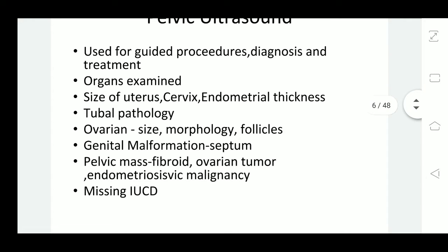Pelvic ultrasound is used for diagnosis, treatment, and follow-up of certain diseases, and also in certain guided procedures. The organs examined are basically the cervix, uterus, and ovaries. In the uterus, we would like to know the size, all the dimensions — anteroposterior, transverse, and longitudinal — the myometrium texture, the endometrium thickness, and the uterine cavity. Anything in the uterine cavity, like fibroid, polyp, or foreign body, can be identified by ultrasound.